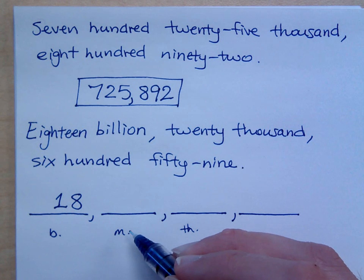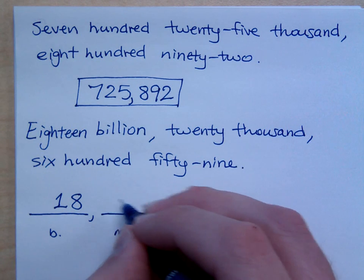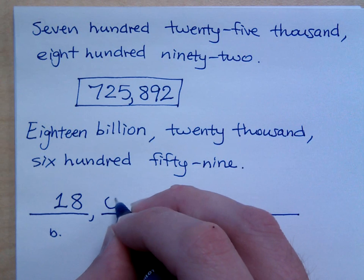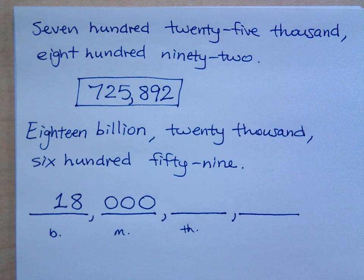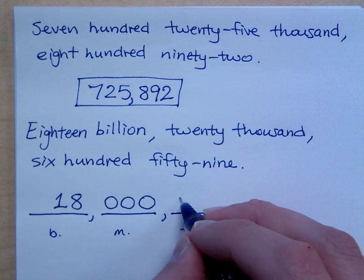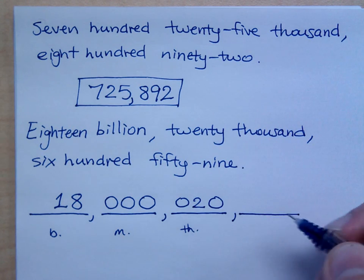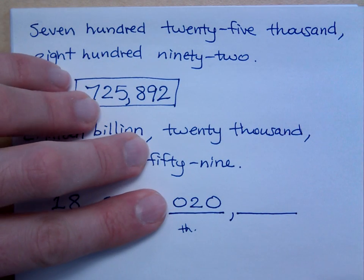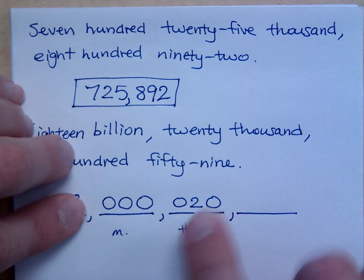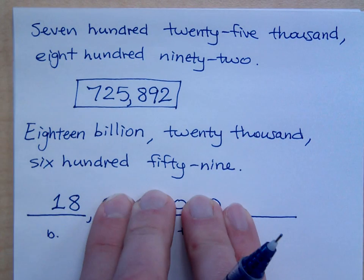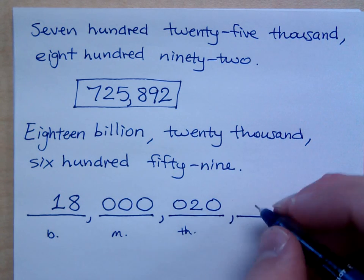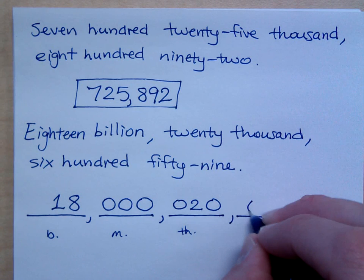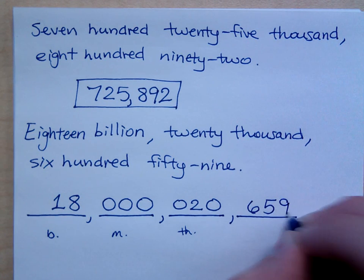How many millions? Zero. Can I just put one zero? No, because we know that there need to be placeholders, otherwise the number doesn't look right. How do you write twenty thousand? How do you put that here? Zero-two-zero. So that's the twenty thousand. No millions — just zero-zero-zero. Eighteen billions, just like I have it written. And then how do you write the last part? Six hundred and fifty-nine.